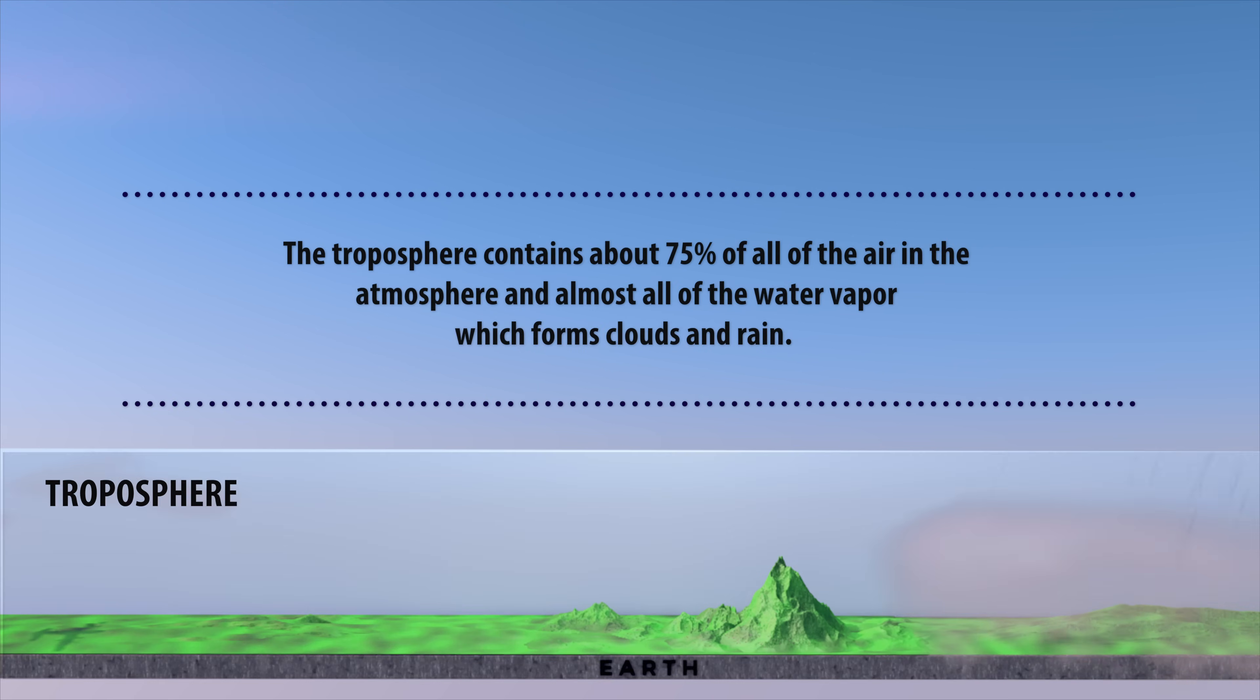The troposphere contains about 75% of all of the air in the atmosphere and almost all of the water vapor which forms clouds and rain.